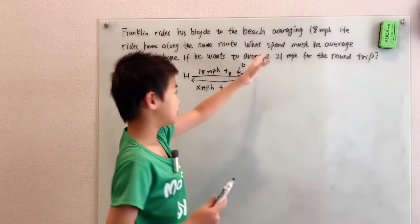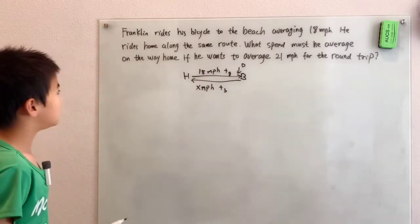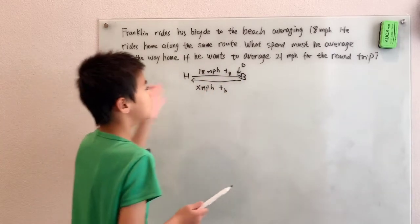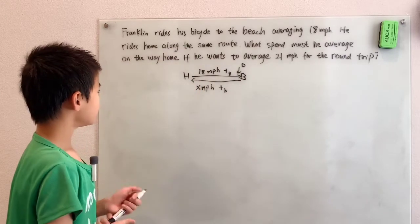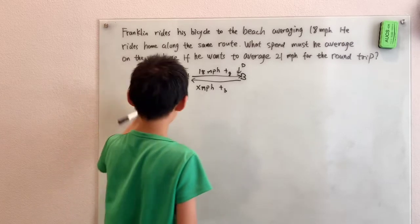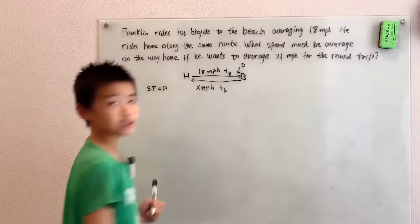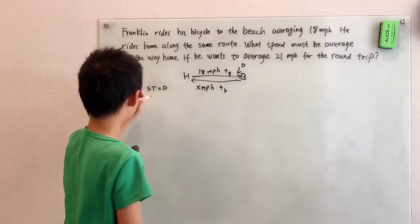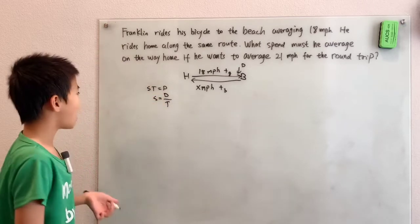And the whole distance from home to beach is D. From home to beach is distance D, and from beach back home is also distance D. So we want X, basically. If you want average 21 miles per hour, using the regular speed times time equals distance problem, the average speed is always distance divided by time.